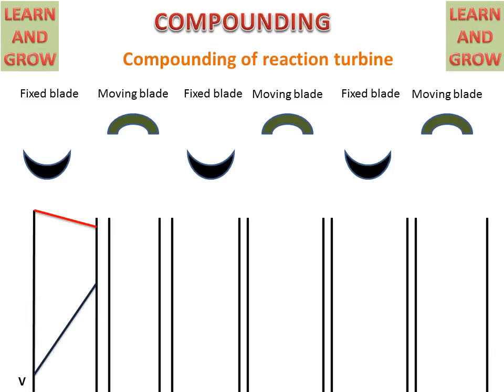Pressure constantly reduces so that it does not harm the structure of the casing. In the last stage, a draft tube is also used in the reaction turbine so that higher kinetic energy can be converted into static pressure. Velocity decreases when steam strikes the moving blade due to absorption of kinetic energy.